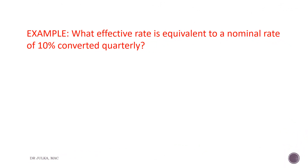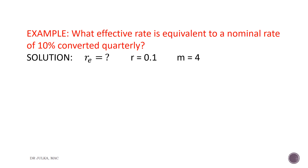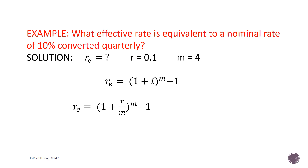In this example we want to calculate the effective rate of interest equivalent to a nominal rate of 10% converted quarterly. We need to find Re. R is given as 10%, which implies 0.1, and m is 4 because the interest is compounded quarterly. We apply the formula: Re equals 1 plus i, whole raised to the power m, minus 1, where i is R divided by m.